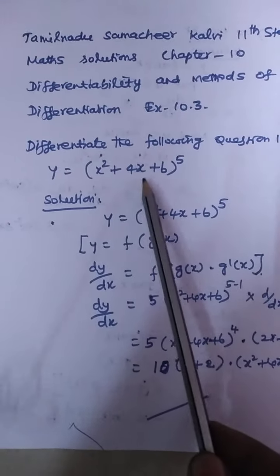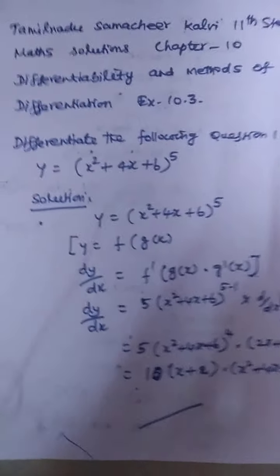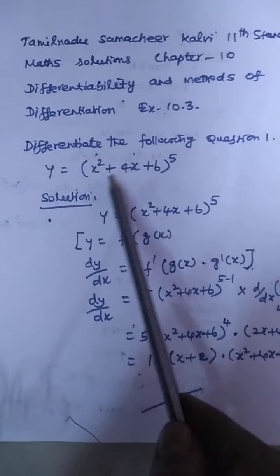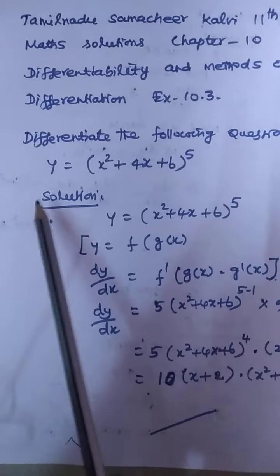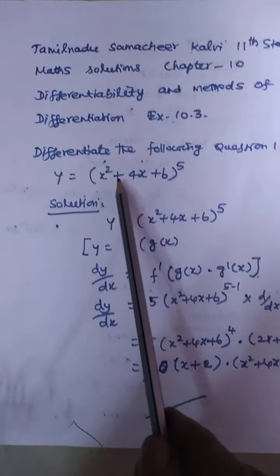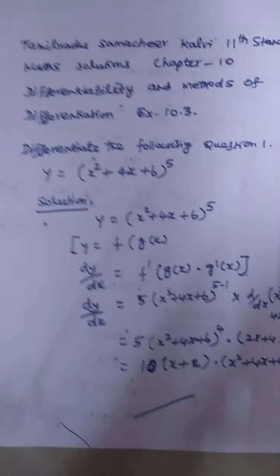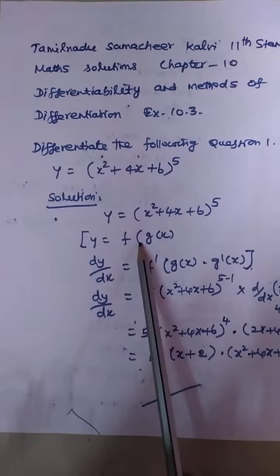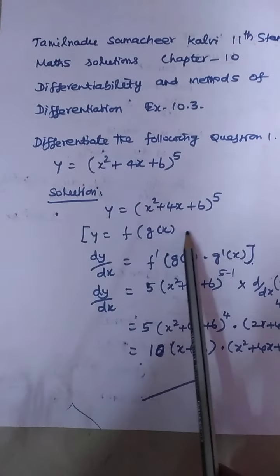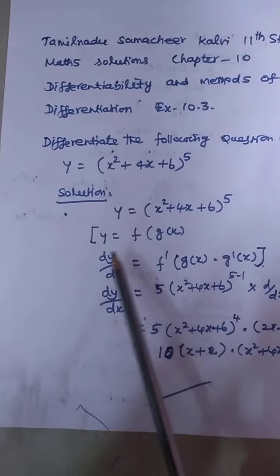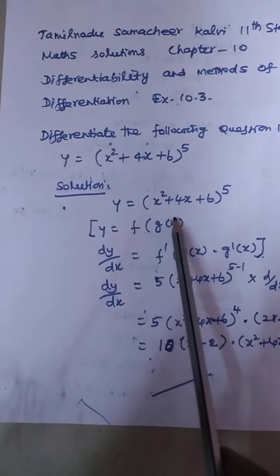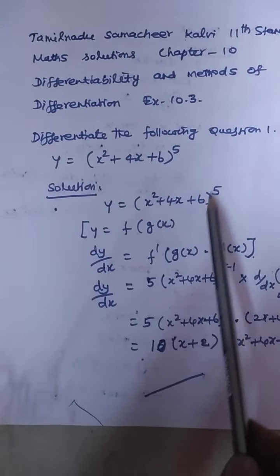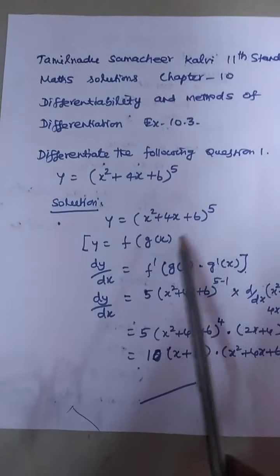y is equal to (x² + 4x + 6) whole power 5. Solution: y is equal to (x² + 4x + 6)⁵. We write this as y = f(g(x)), where g(x) = x² + 4x + 6. So the right-hand side (x² + 4x + 6)⁵ is f(g(x)).